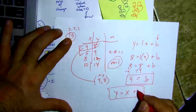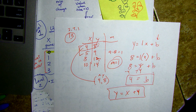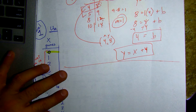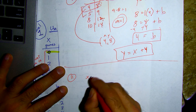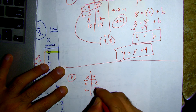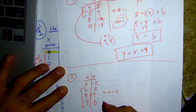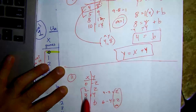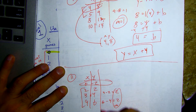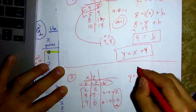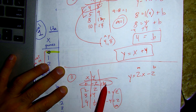Let me do number eleven quickly. x, y: zero, negative two; two, three; four, four; six. Four minus two is two; six minus four is two — slope is two. I also know my initial amount is negative two. Slope is two because I went through my sequential numbers and the difference was two. When x is zero we're at our initial amount, so y equals two x minus two.